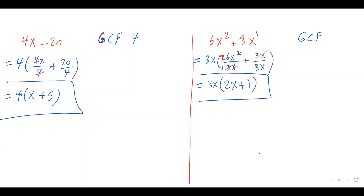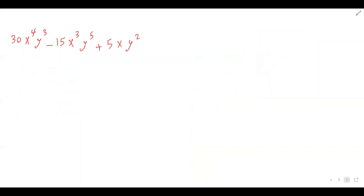So we rewrite this expression as a product of two factors: 3x and (2x + 1). This is common factoring. If you're not comfortable with simplifying exponents, you can watch my previous videos — I'll put the link up here. All right, let's move on. I have two more examples.